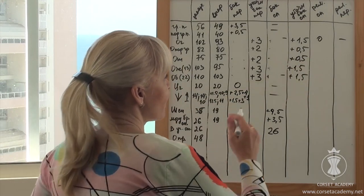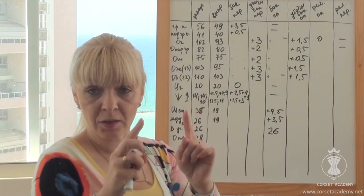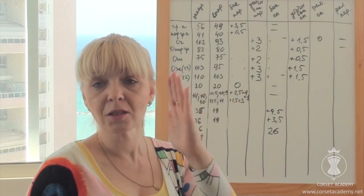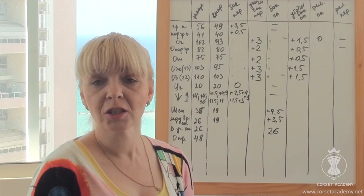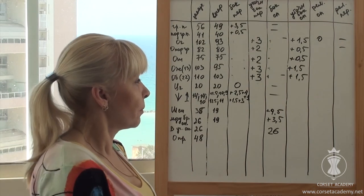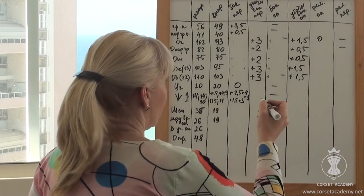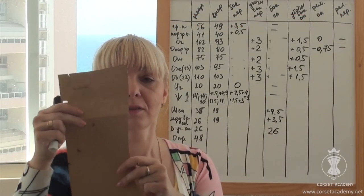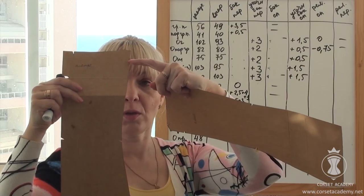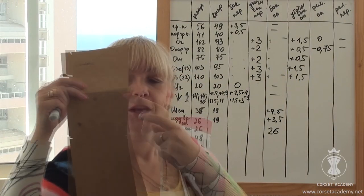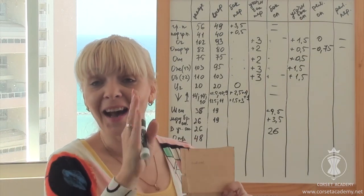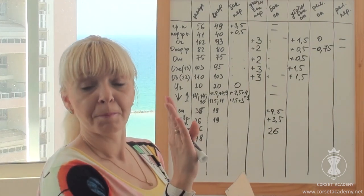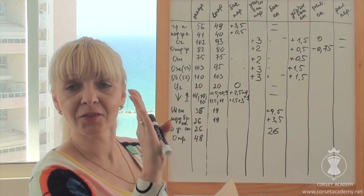We are only working with the back princess seams for now. There are 2 princess seams at the back, left and right. And each princess seam is made of 2 raw edges sewn together. Therefore, there are 4 raw edges at our disposal. We need to divide 3 cm by 4. In other words, we shift each raw edge of each back princess seam, 0.75 cm inwards, at the under bust level. Imagine the way it will look on the pattern of the back. We are not removing anything in the bust, only at the under bust level. What happens with the back of the corset then? It doesn't cling as tightly to the body. And it's exactly what we want. It's what we have been trying to achieve.